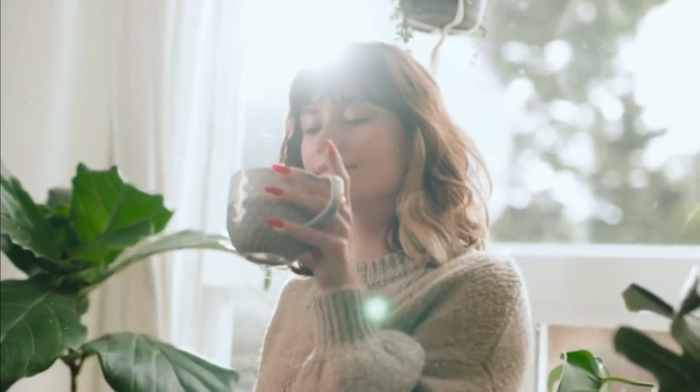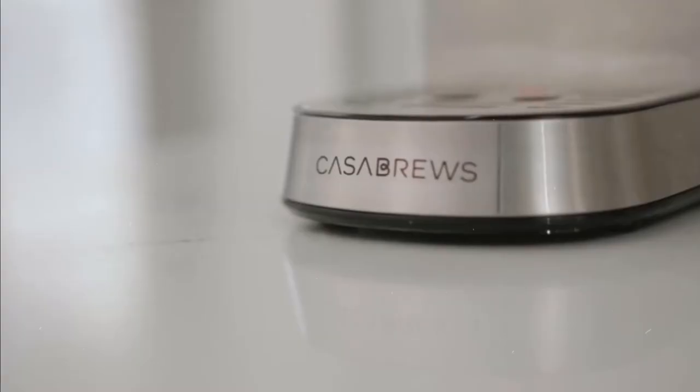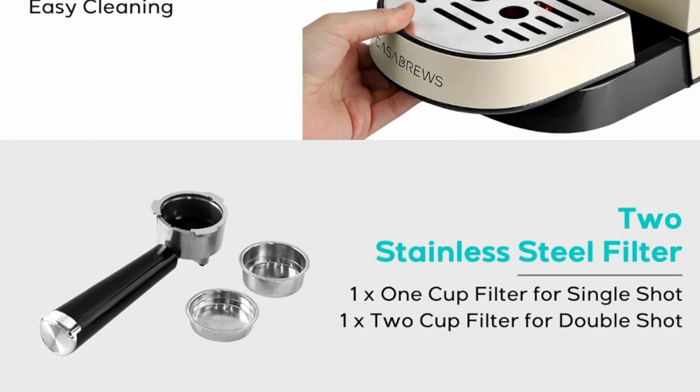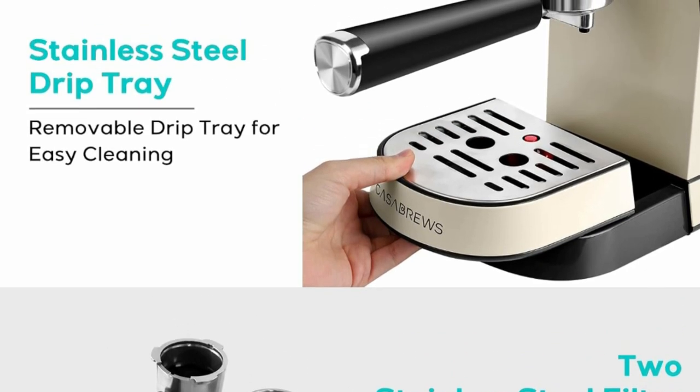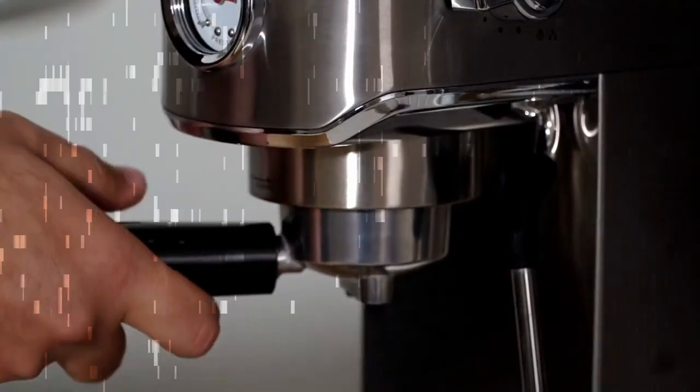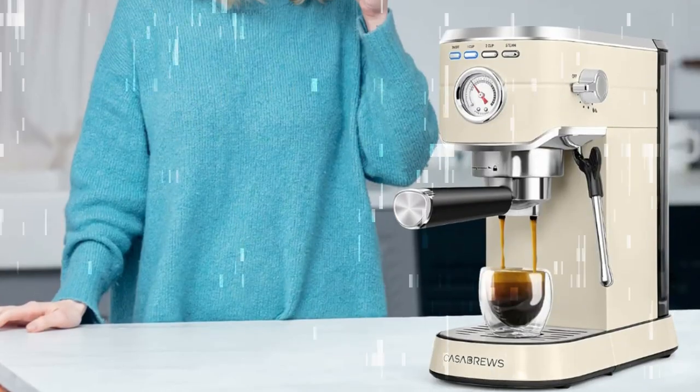With 20 bar professional Italian pump and 1350 watt powerful motor, this espresso coffee maker gives you top quality extraction, resulting in a more fragrant and rich aroma. The built-in pressure gauge on this cappuccino machine shows the exact pressure, helping you make adjustments according to your personal taste preferences.